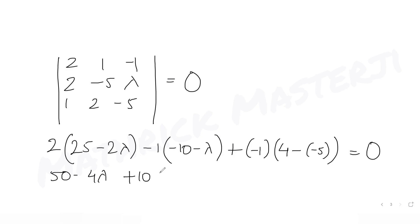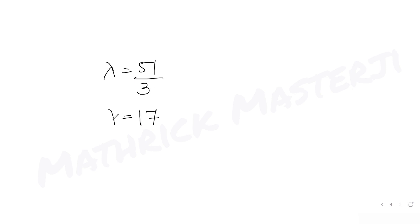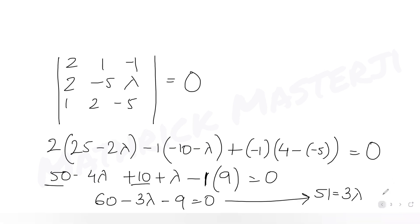Solving further: 50 - 4λ + 10 + λ - 9 = 0, which gives 60 - 9 - 3λ = 0, so 51 = 3λ. Therefore λ = 51/3 = 17. We now have the value of λ.